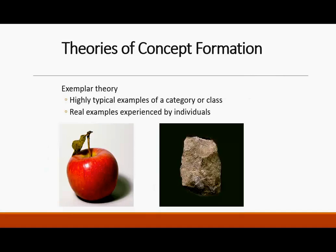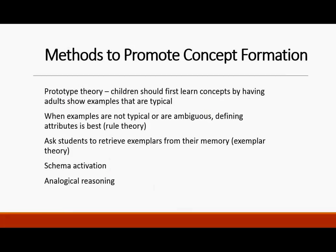We have the idea of an exemplar, which is like a prototype, but we're using a highly typical example of a category, not necessarily the most prototypical. Real examples experienced by individuals. The prototype theory says that children should first learn concepts by having adults show examples that are typical. When examples are not typical or are ambiguous, defining attributes is best — so we want to use the rule theory for atypical or vague things, looking at characteristics and establishing what rule it follows.